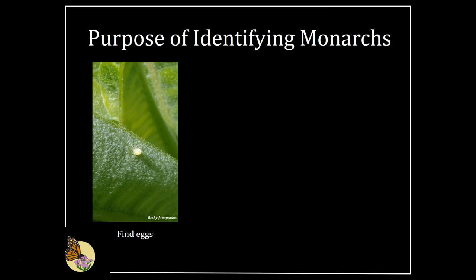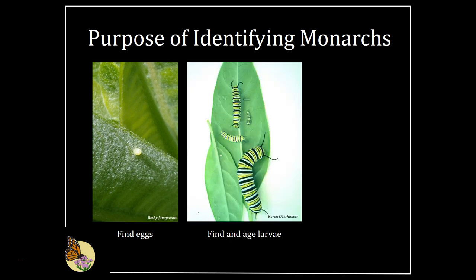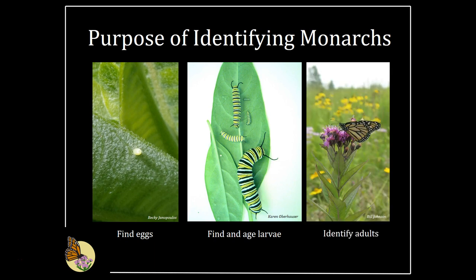There are several activities in the Integrated Monarch Monitoring Program that include identifying monarchs in different life stages. One of the objectives of this program is to understand monarch reproduction, such as when and where adults lay eggs. You'll need to correctly identify monarch eggs if you conduct the Egg and Larvae Survey. That survey also requires that larvae are identified to instar, or caterpillar age. Adult monarch surveys require that you correctly identify adult monarchs — and watch out, we'll review a few lookalikes that can be tricky.